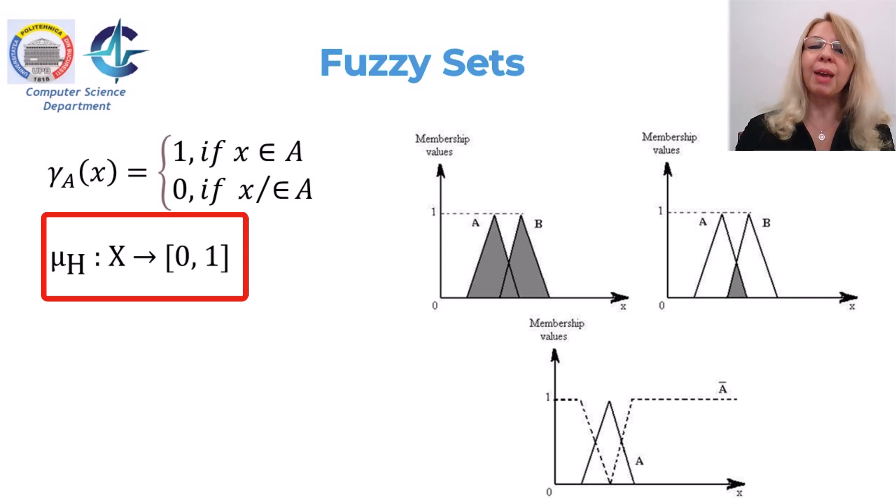There are two advantages of such representation of mapping. One, it allows representation of prior knowledge about the system. And secondly, this representation is highly interpretable.